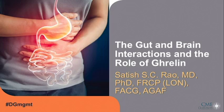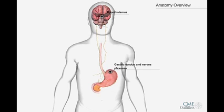Allow me to walk you through the gut and brain interactions and the role of ghrelin. Here is a healthy gastrointestinal tract with the brain, esophagus, and stomach. You can see how the nerves connect the brain to the stomach.